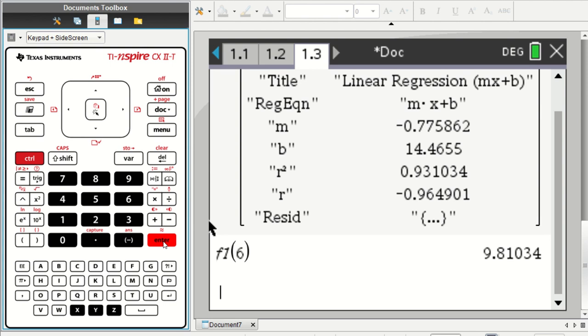So about 10 turtles would be on the log after six minutes. This is called interpolation because six is within the x values of the data set, within the minutes of the data set.